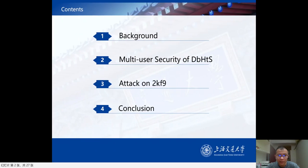Our talk is divided into four parts. The first one is the background about DBH MACs. The second one is the multi-user security results of DBH MACs. The third one is our attack on 2KF9. The final one is the conclusion.